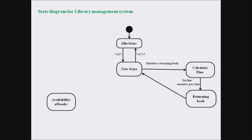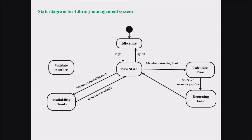From the new state, the customer can check for the availability of a book, moving towards the availability of book state. The transition message from new state to availability of book is that the member is requesting for a book. The librarian or kiosk checks availability, and the return transition indicates whether books are available or not available.